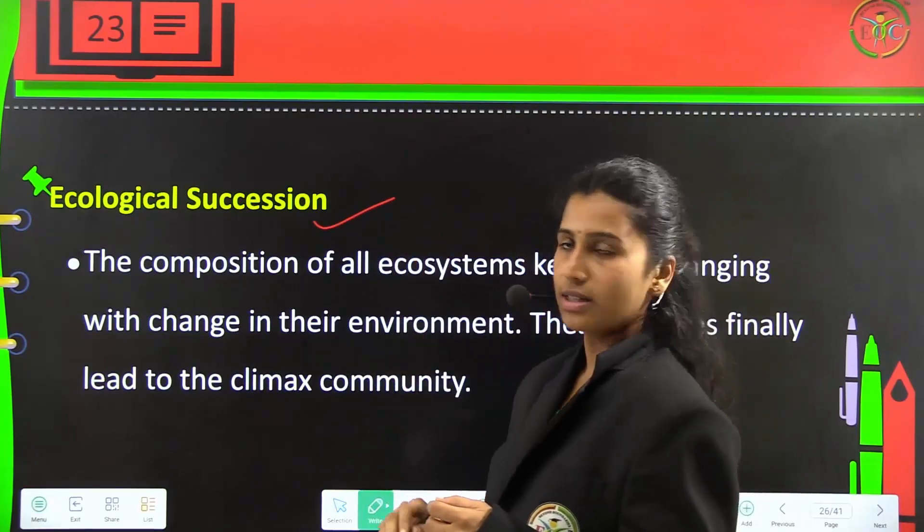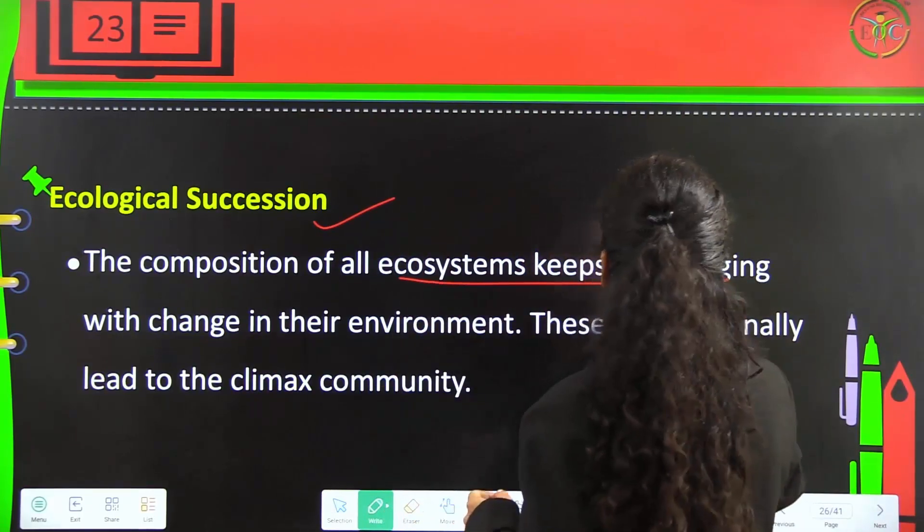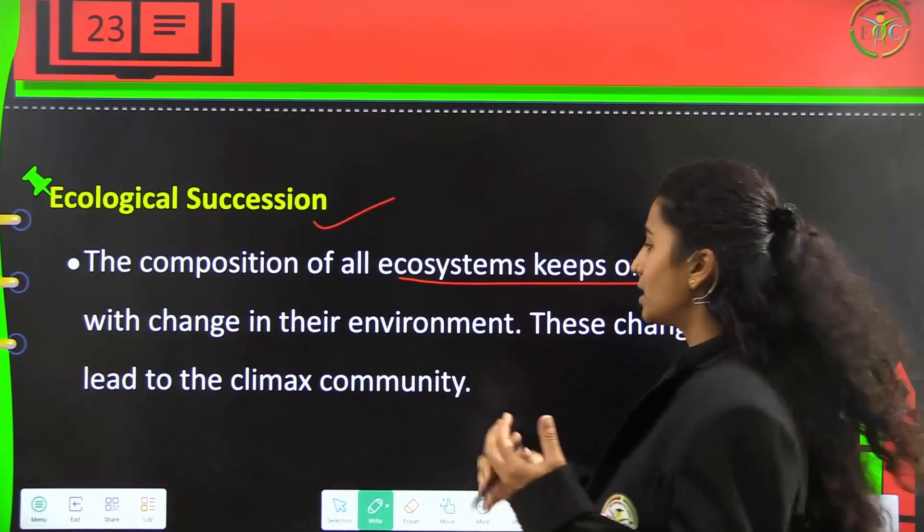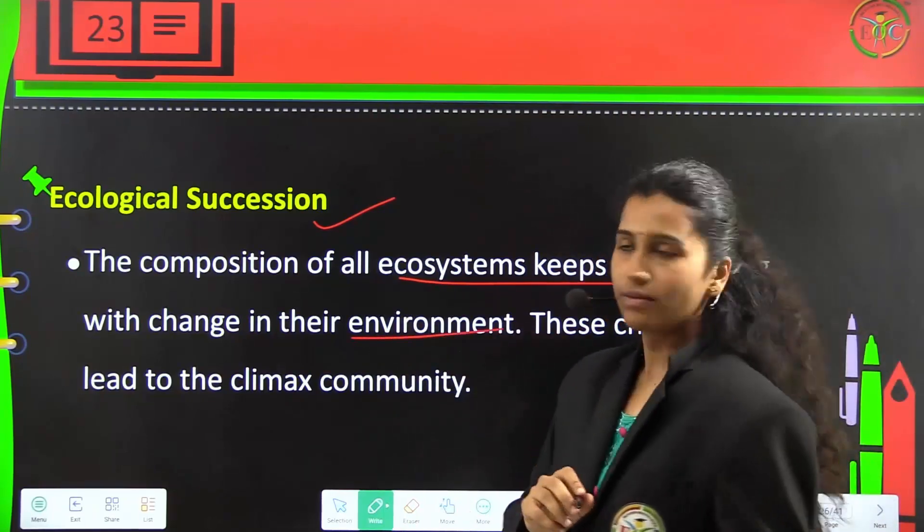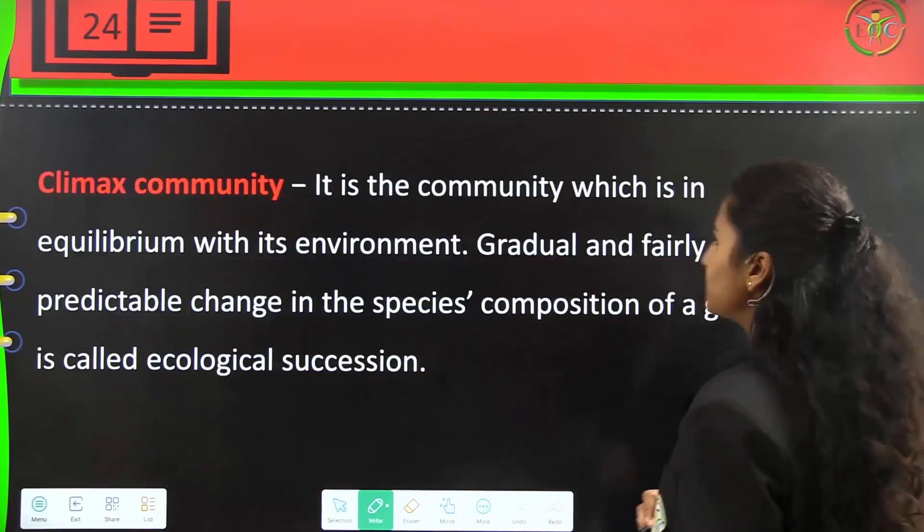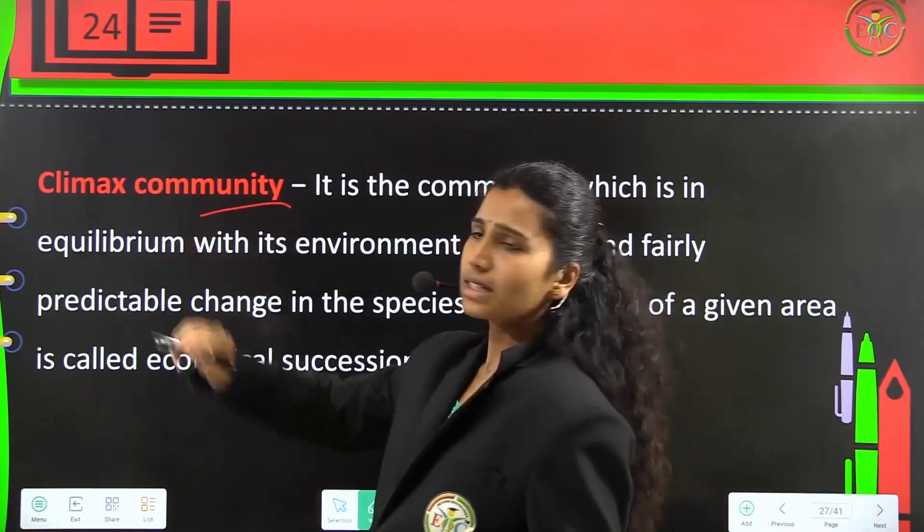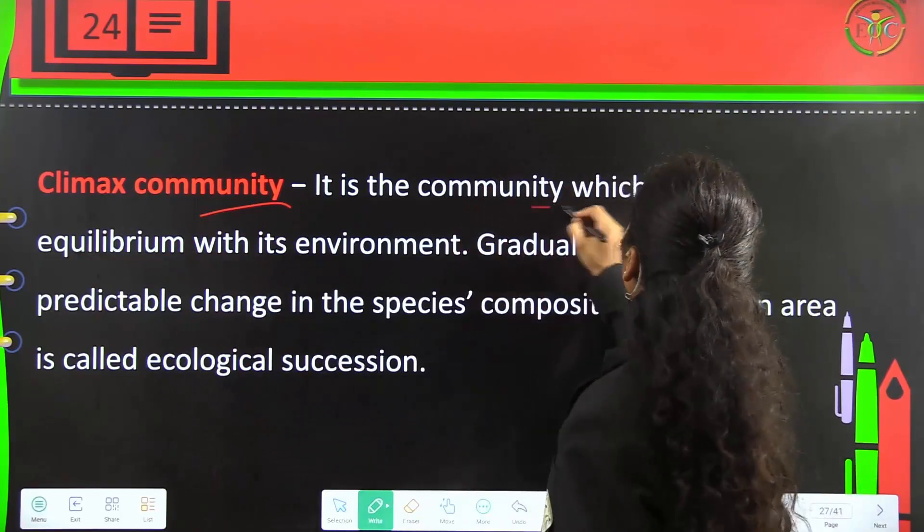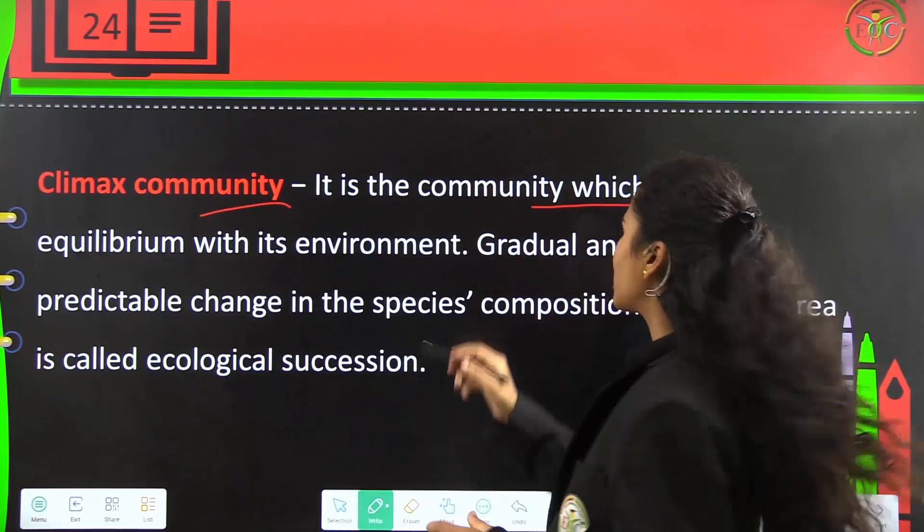Ecological succession: The composition of all ecosystems keeps changing with the change in their external environments. These changes finally lead to the climax community, which is the community in equilibrium with its environment.